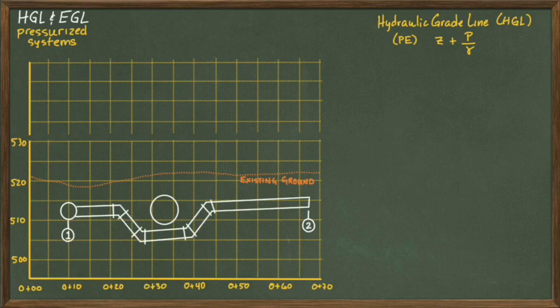I'll add in these tick lines to show the pipe joints and label the start and end of the visualization with the labels for points one and two.